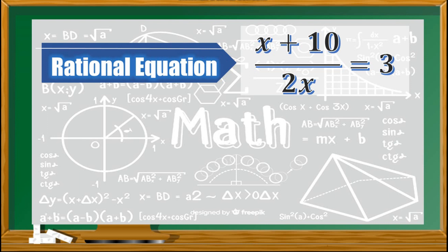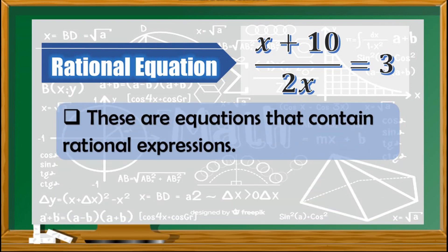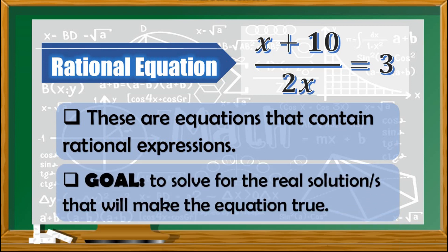Rational equation. The given here, x plus 10 over 2x equals 3, is an example of a rational equation since it contains a rational expression, which is x plus 10 over 2x. The goal in a rational equation is to solve for the real solution or solutions that will make the equation true.